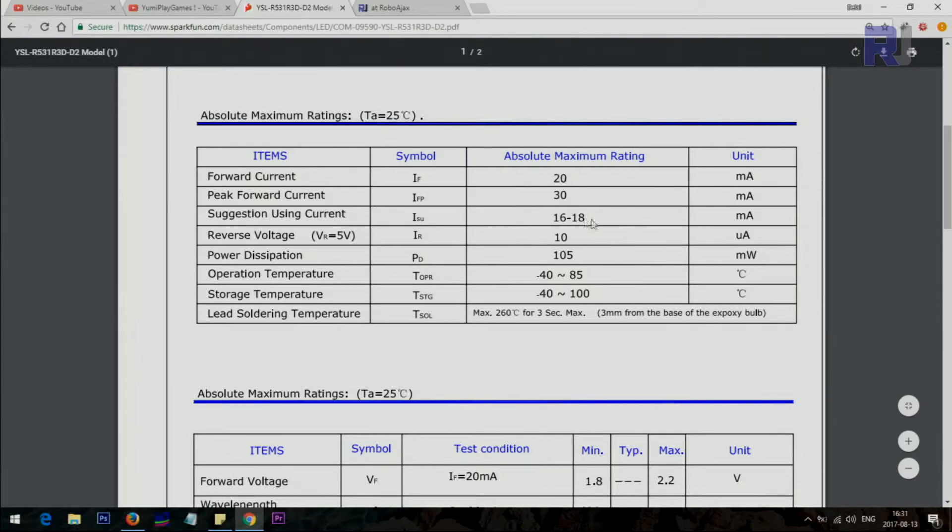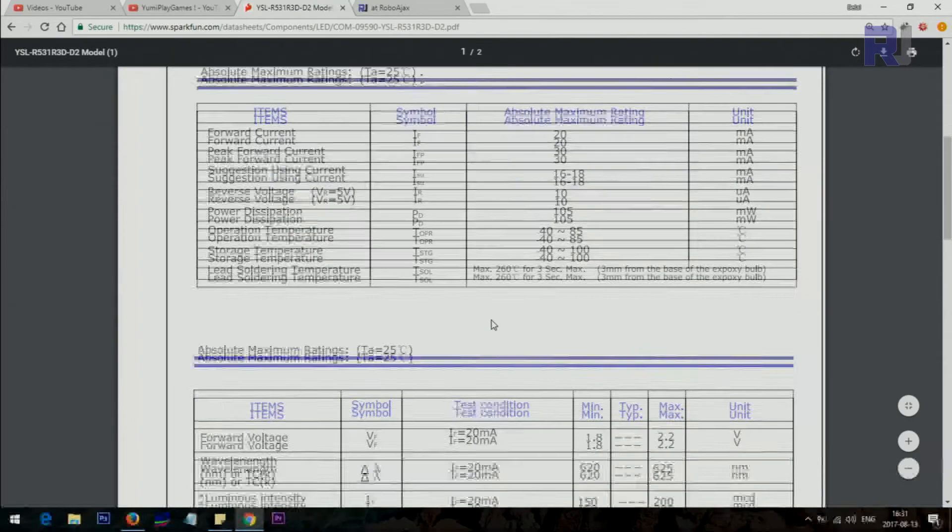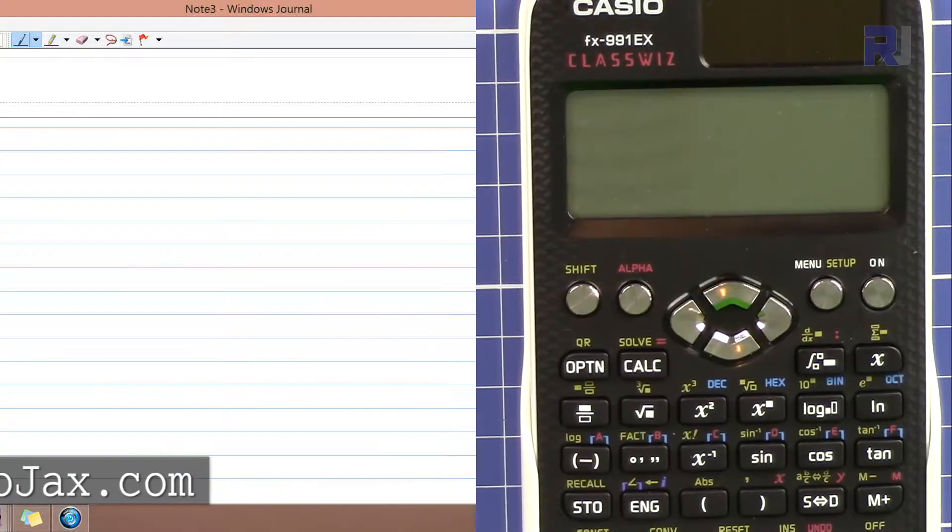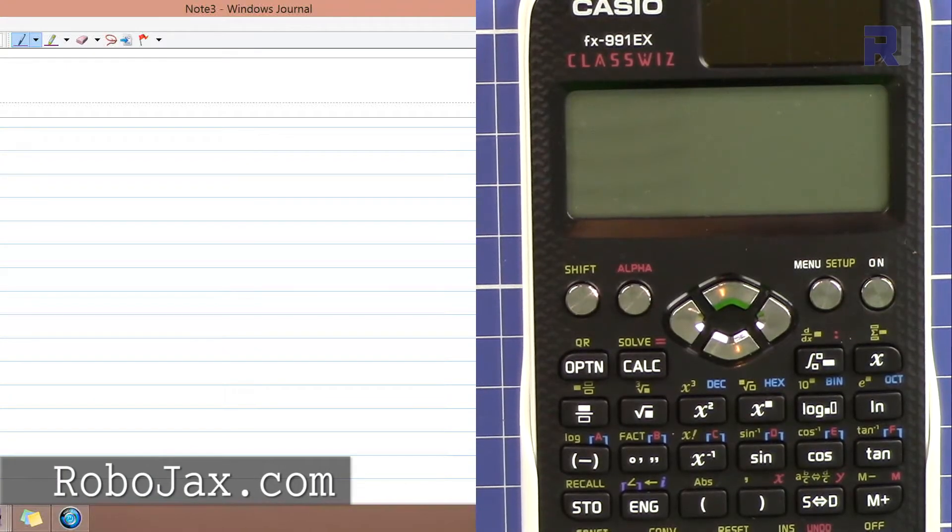Here is the voltage. This line shows for forward voltage at 20 milliampere, the minimum voltage is 1.8 and the maximum is 2.2 volts. So these are the wavelengths. Let's say we have an LED that works with 2 volts.